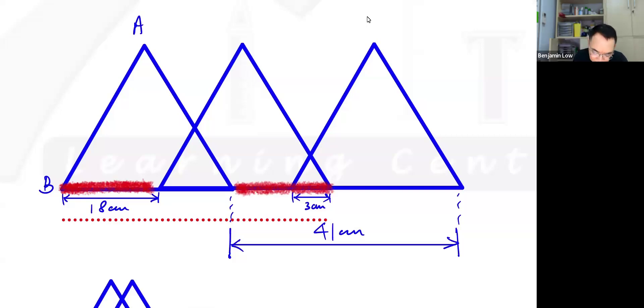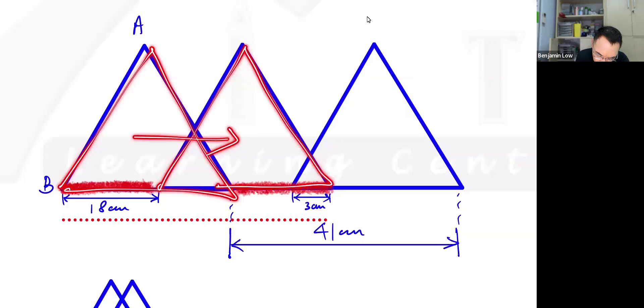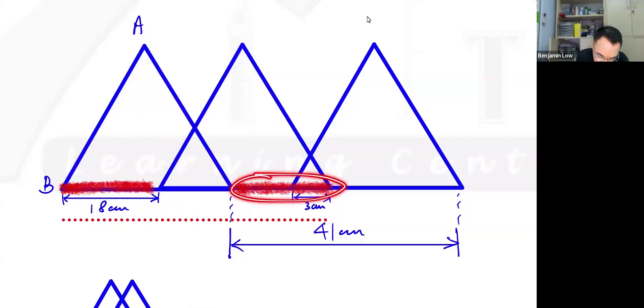because effectively, I'm taking this triangle, which started over here, and I shifted it so that it came over here. So the amount that I shifted here is the same as the amount that's here, based on how I explained it just now. So if this is 18,